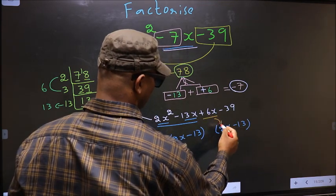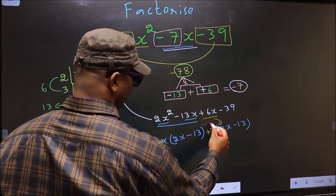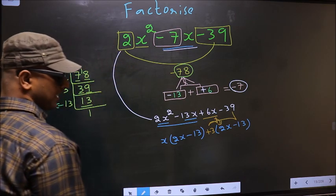Now from this 2x has gone inside, so outside you get +3. Even if you multiply and check, you still get the same thing.